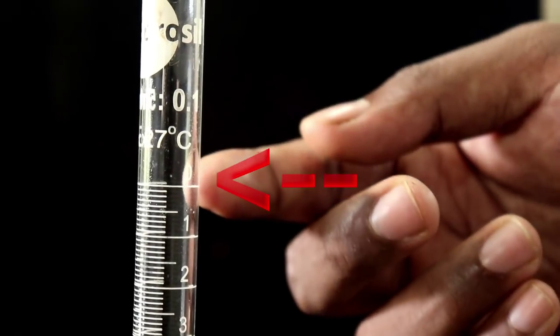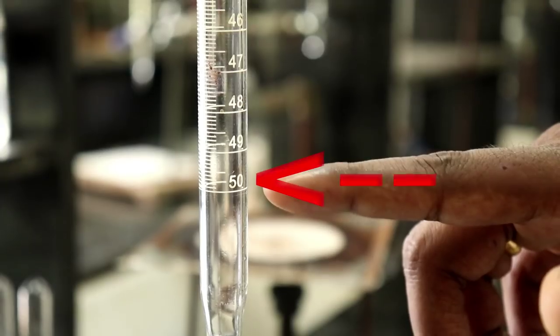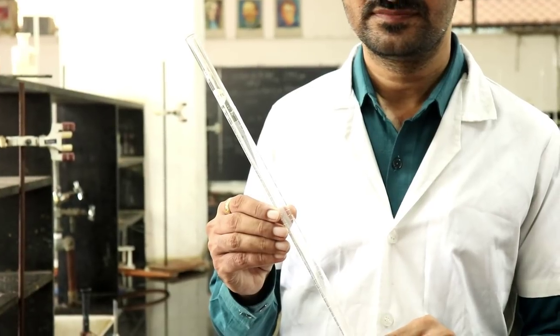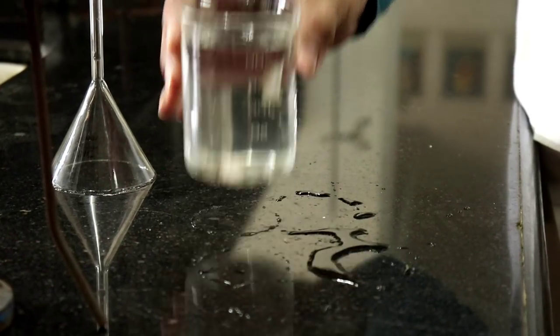There is a zero mark at the top of the burette and a 50 ml mark at the bottom. The burette is to be read from top to bottom.